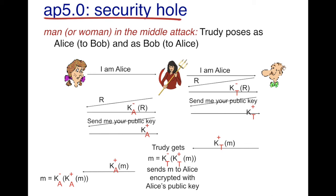Now suppose Bob wants to send a message to Alice. Trudy receives this message from Bob, encrypted with her public key. Trudy uses her private key to decode the message, then re-encrypts it with Alice's public key and sends it to Alice. Alice can decode the message with her private key. So both Alice and Bob believe they have established authentic communication with each other. They wouldn't know about Trudy sitting in the middle — the man-in-the-middle — and Trudy can read all messages being exchanged between Alice and Bob.